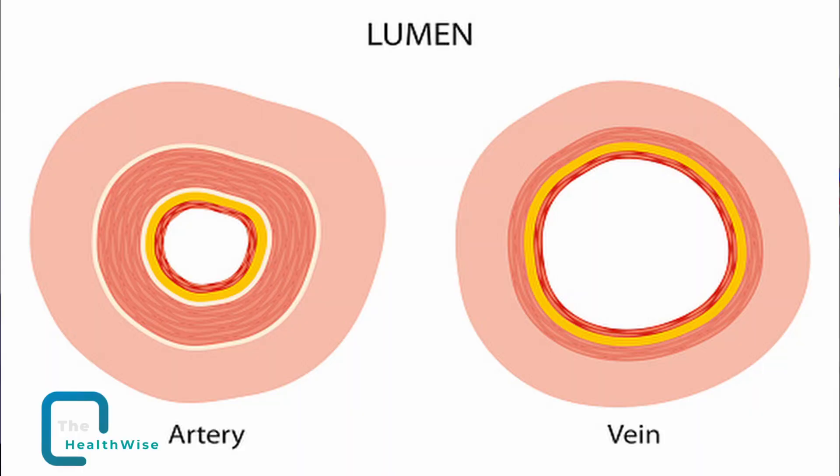Something very important to maintain blood moving in one direction is the valves. The valves ensure blood is always flowing in one direction. In veins, the lumen is larger compared to arteries, meaning blood is not under high pressure, so it has to be forced upward. The valves then close to prevent blood from flowing back, maintaining one direction all the way up to the heart.